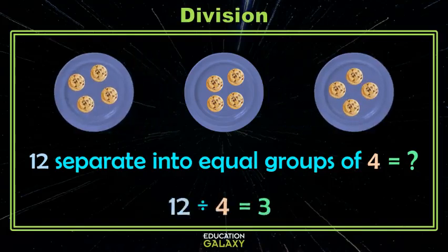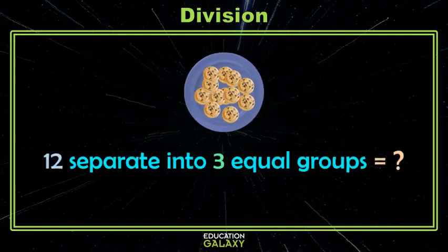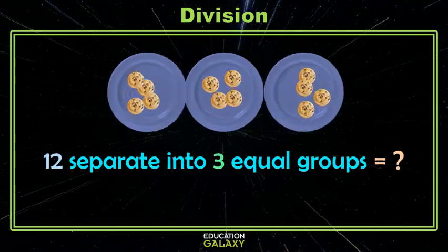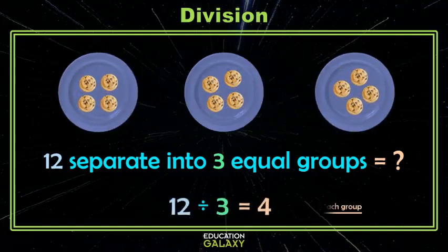we could use division and that would tell us how many groups we had. Similarly, we learned that if we started with a total and we wanted to separate it into equal groups, we could use division to find the number in each group.